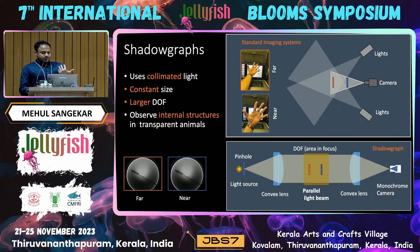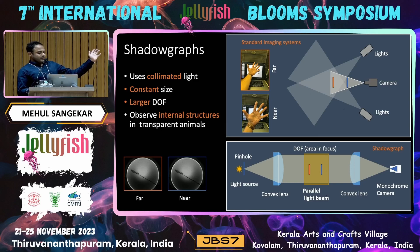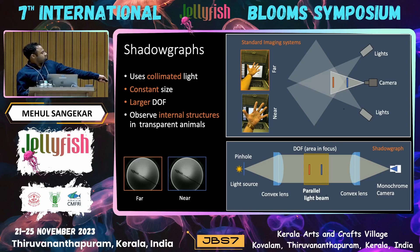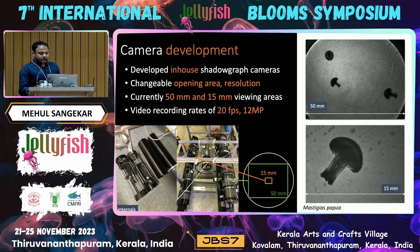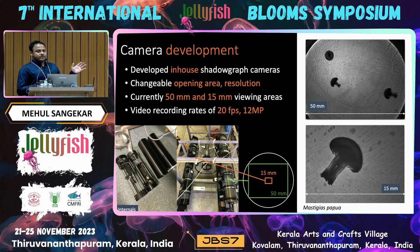The technique we were developing in the lab is shadow graphs. The shadowgraph technique itself is not new — it's been around for a long time. Unlike a normal camera, it uses collimated light, so because the light is parallel, it doesn't matter how far you are from the camera, you always get the same size. And because it's backlight imaging, you can see through the animals. We've been developing low-cost shadow graphs in the lab and trying different resolutions.